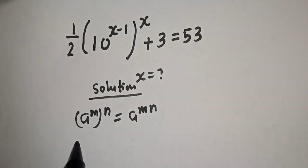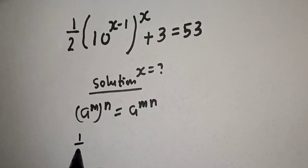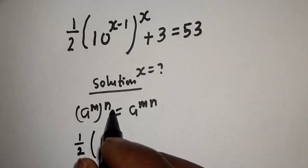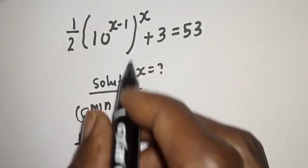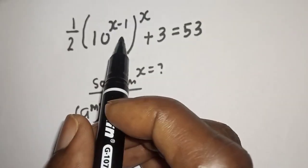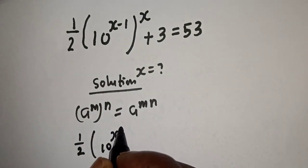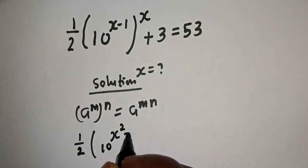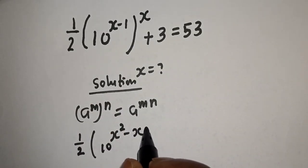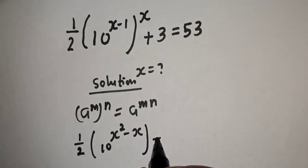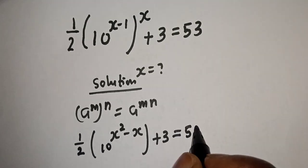Applying this rule, we have (1/2)(10^((s−1)(s+3))) = 53. Let's open this bracket: (s−1)(s+3) expands to s·s + s·3 − 1·s − 1·3, giving s² + 3s − s − 3, which is s² + 2s − 3. So we have (1/2)(10^(s²+2s−3)) = 53.